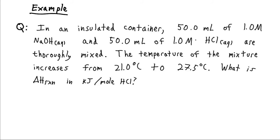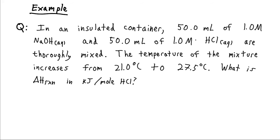Let's say we have an acid-base reaction. We take 50 milliliters of 1 molar sodium hydroxide and 50 milliliters of 1 molar hydrochloric acid. We mix these thoroughly so they fully react and measure the temperature change of the mixture, finding it increases from 21 degrees Celsius up to 27.5 degrees Celsius. We want to find the enthalpy change of the reaction in kilojoules per mole of HCl. We start by finding the heat transferred into the water, since that's what our thermometer measures.